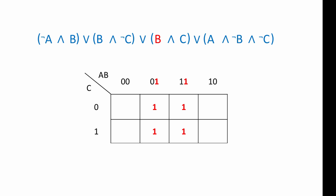Next we look at B AND C. These four ones represent B — wherever there's a one, input B is one. But of those four ones, only this pair satisfies input B as one and input C as one. So these two ones represent B AND C. Let's put those aside and look at the final part of the expression.